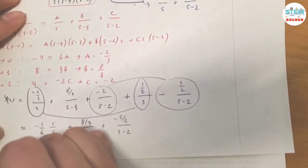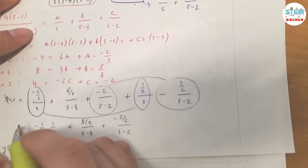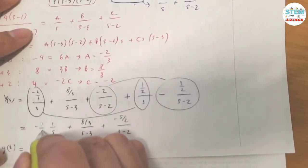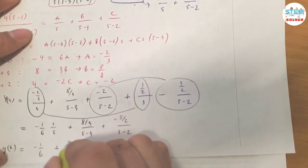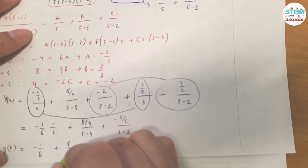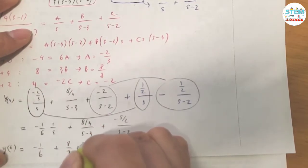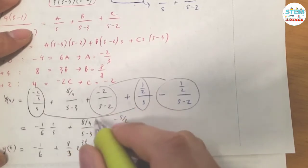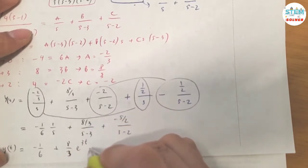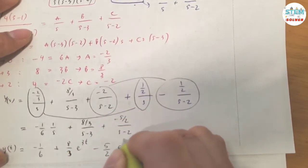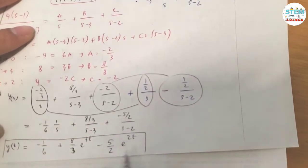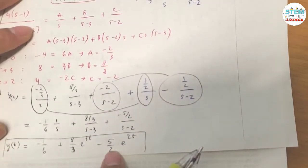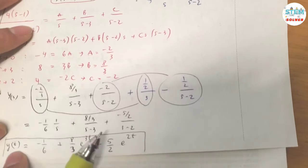Now take the inverse Laplace transform on both sides. This gives Y(t) equals negative one-sixth plus eight-thirds — that is the answer for Y(t). We're not done yet.